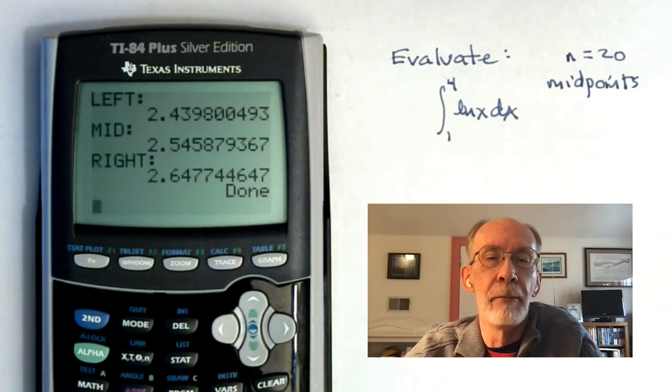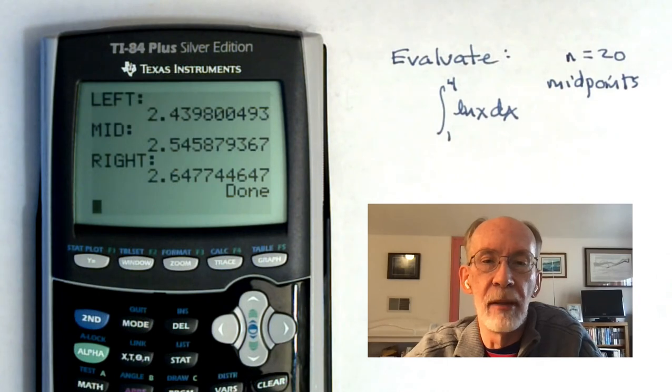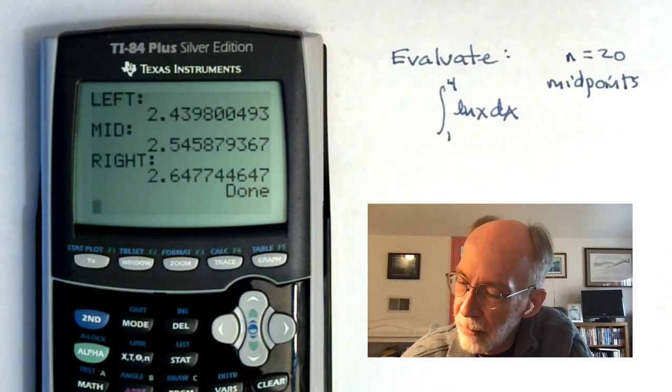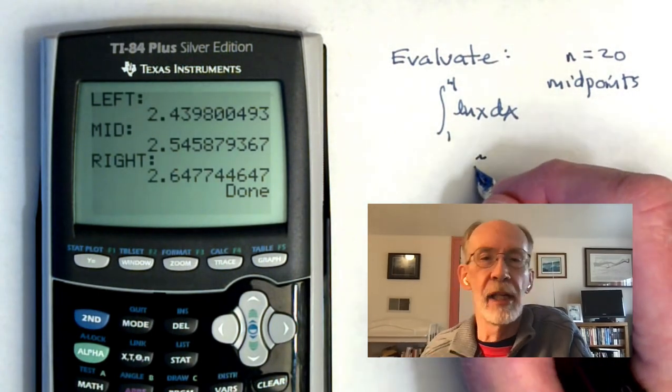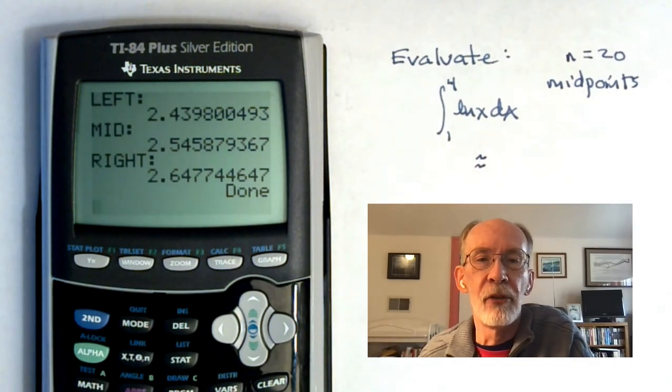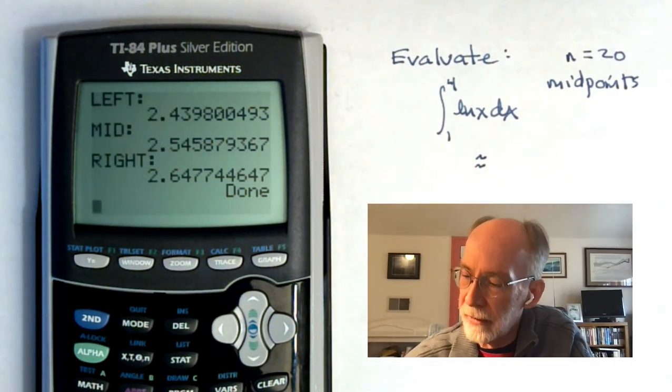And out they come. A left endpoint Riemann sum, a midpoint Riemann sum, and a right endpoint Riemann sum. We were imagining that we had been asked for the midpoint sum. So, we would say 2.546.